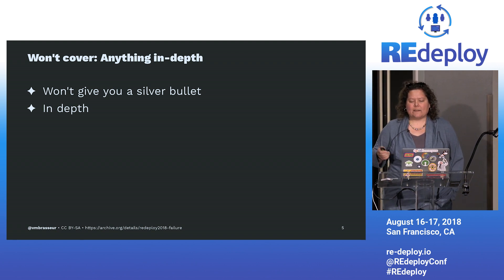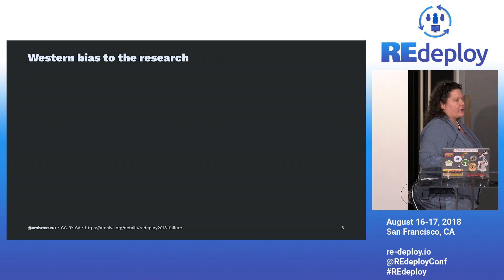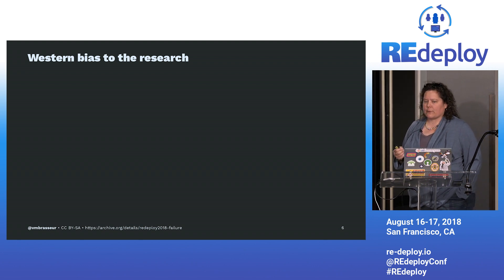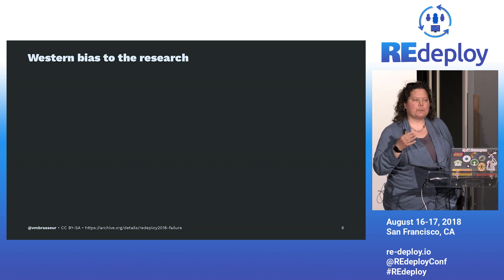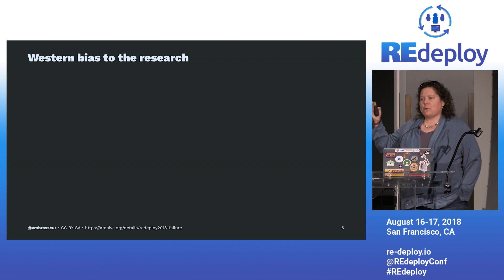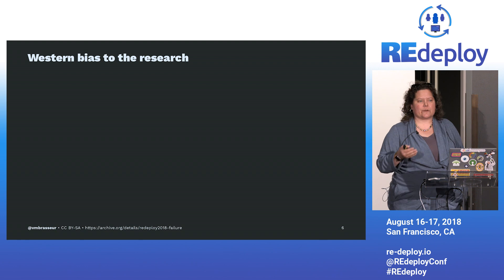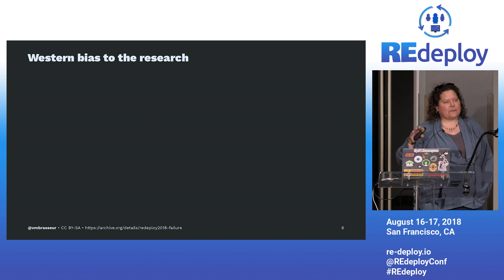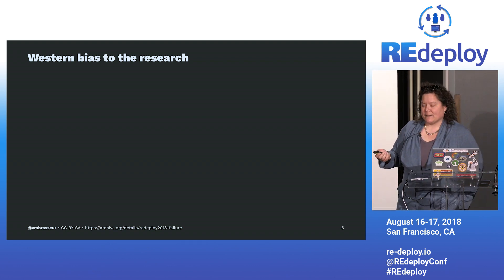One final limitation of this talk: all of the research I've studied was done under European psychology on predominantly Western subjects. Unrelated psychological studies have recently, finally, shown that Western psychology doesn't necessarily apply to people of other cultures — Eastern, African, or anyone who is not in a European-based culture. So most of this stuff should mostly apply, but you should be aware that there is a Western bias to this study.